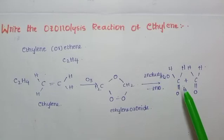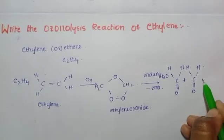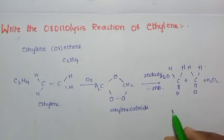The leftover oxygen reacts with the water present, forming a peroxide — that is H2O2. So the product of ethylene ozonolysis gives us two molecules of formaldehyde and H2O2.